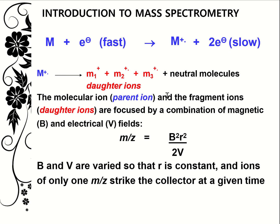The molecular or parent ion and the fragment ions are focused by a combination of magnetic and electrical fields. The mass-to-charge ratio is proportional to the magnetic field strength and inversely proportional to the electrical field strength, where r is the radius of curvature of the path. B and V are varied so that r is constant, and ions of only one mass-per-charge ratio strike the collector at a given time.